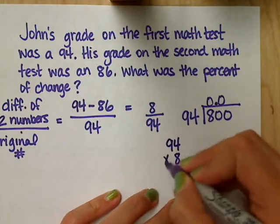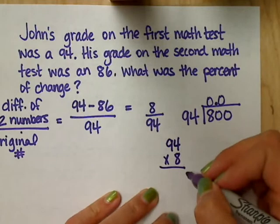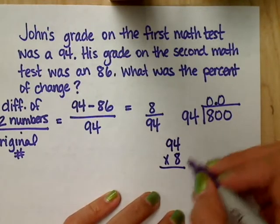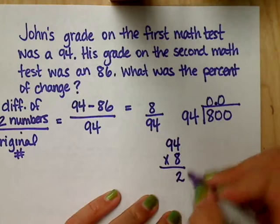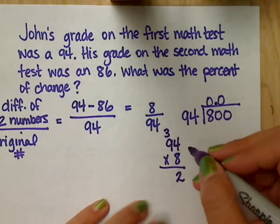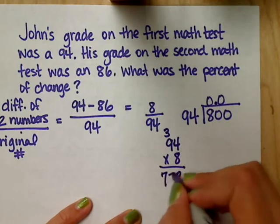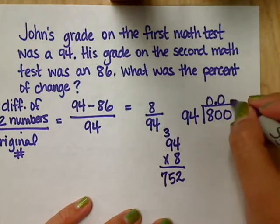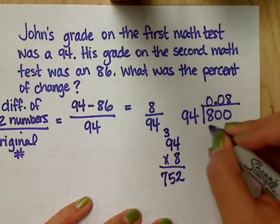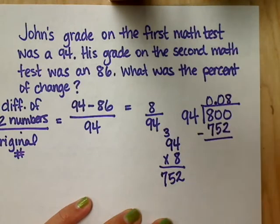94 times 8. And you should be working this out with me, unless it's already written down on your paper. 8 times 4? 32. 32, thank you. 8 times 9? 72. 72 plus 3? 32 plus 9. I think that's it. So that's 8 times 752. Subtract.